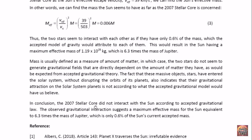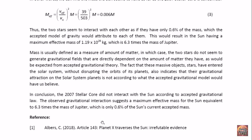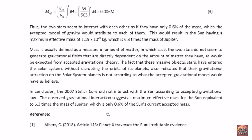In conclusion, the 2007 stellar core did not interact with the sun according to accepted gravitational law. The observed gravitational interaction suggests a maximum effective mass for the sun equivalent to 6.3 times the mass of Jupiter, which is only 0.6% of the sun's current accepted mass. This is Dr. Claudia Albers, Planet X physicist. Thank you for watching.